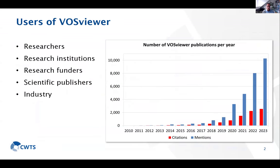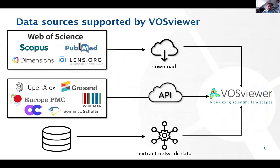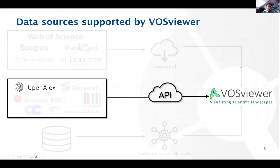VOSviewer is mostly used by individual researchers who want to know more about their own field of science — to get an overview of important papers, to see connections between papers, or to study how researchers collaborate. But it is also used by research managers, institutions, funders, publishers, and many other users. The tool supports a large number of data sources, but today we will focus on OpenAlex.